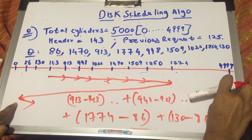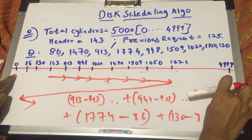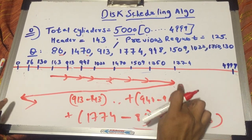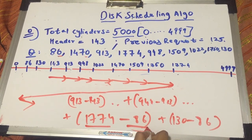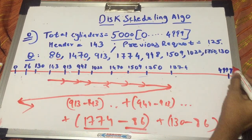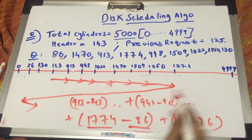So the total seek time here would be 913 minus 143 plus 948 minus 913 and plus when we reach at 1774, it becomes 1774 minus 86 plus 130 minus 86. Whereas in the C-SCAN, it would have been 4999 minus 0. But in this case, it has 1774 minus 86 because we take the extreme values in our queue but not in the total number of cylinders.